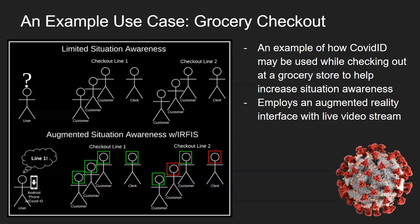Here we can see an example use case: a grocery store checkout. Say the user is trying to decide which checkout line to go to. If they have the COVID-ID Android application, they can plug in their infrared camera, and then the system can perform live head detection on all individuals in the frame and determine if any may have signs of fever. Based on this information, the user could choose checkout line one, where there are no instances of fever, rather than checkout line two, which has possible risky situations with individuals who may have fever. This is a classic example of augmented situation awareness — by providing this augmented reality interface, the user can get more information about their environment and use that information to make better informed decisions to avoid spreading or contracting COVID-19.